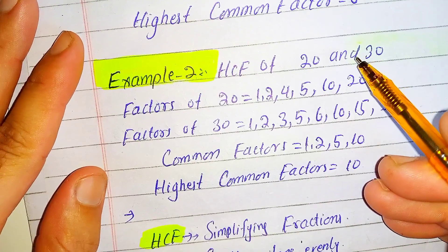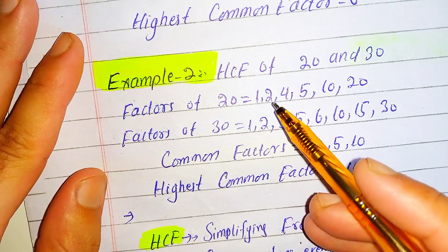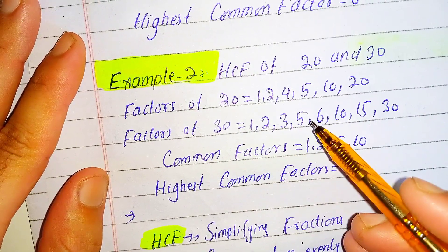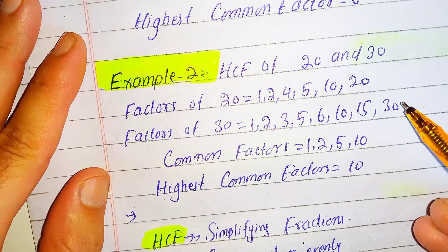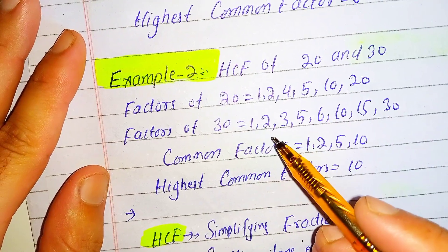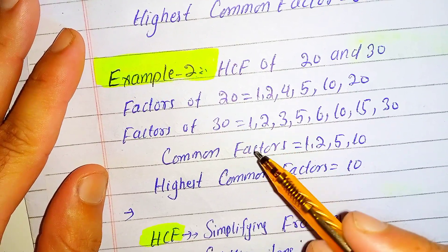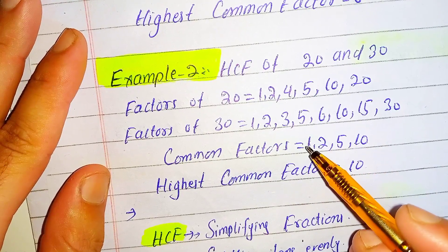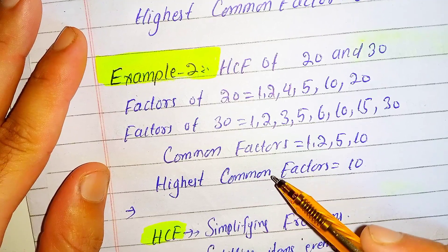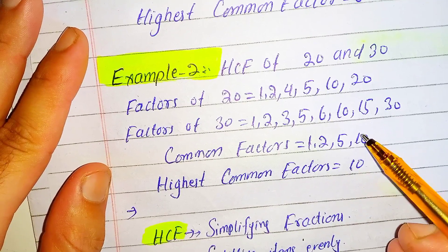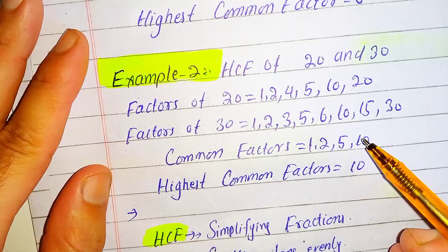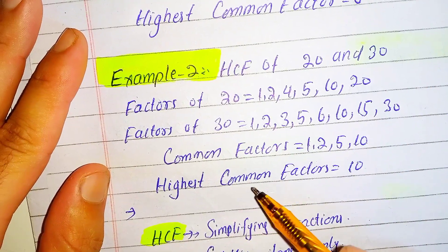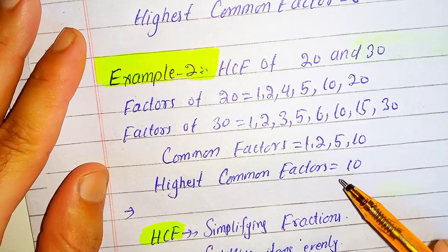Here is another example: find the HCF of 20 and 30. The factors of 20 are: 1, 2, 4, 5, 10, and 20. The factors of 30 are: 1, 2, 3, 5, 6, 10, 15, and 30. The common factors are 1, 2, 5, and 10. The highest common factor is 10, because 10 is the greatest common factor of both 20 and 30.